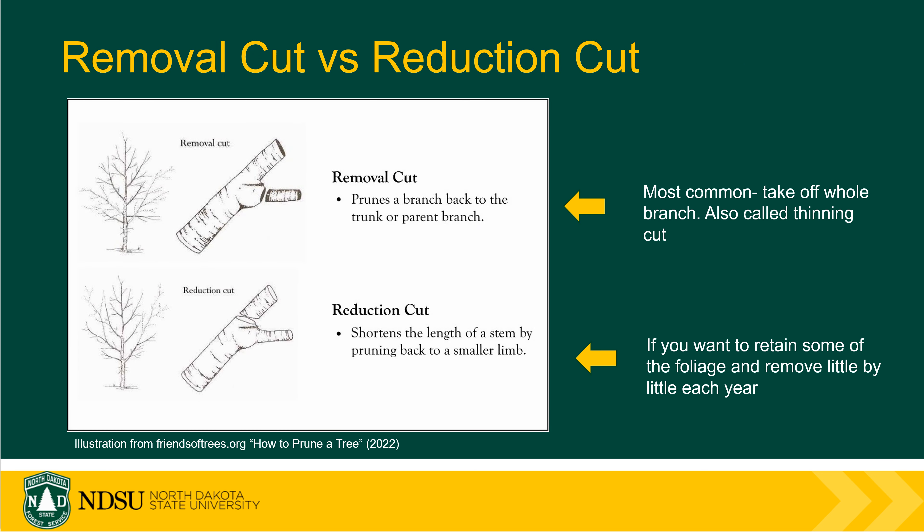There are two kinds of cuts we make while pruning. One is the removal cut — you're taking a branch all the way back down to the main stem. The other is a reduction cut, where instead of removing the whole branch, you take the top part or a section down to another smaller branch, so you're not taking all the foliage at once — redirecting growth little by little every year into the stems that you want.